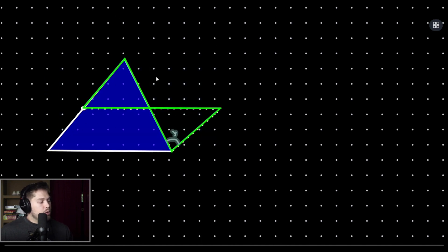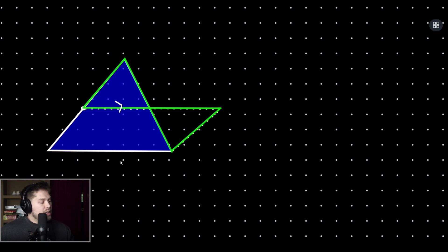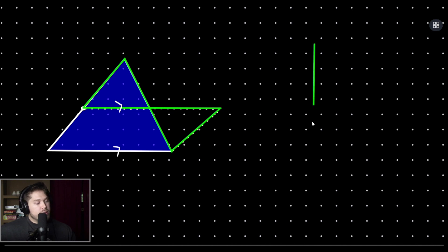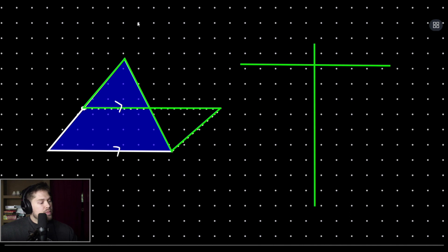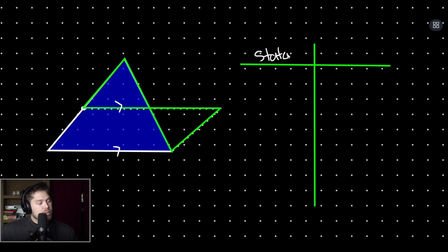Now that we have proved that this line and this line are parallel, let's prove that the mid-segment is half the distance of the full base. These two triangles are congruent, and therefore their corresponding parts are congruent.